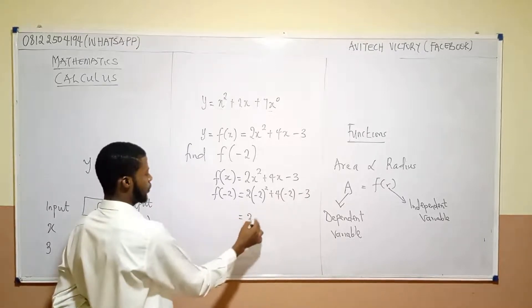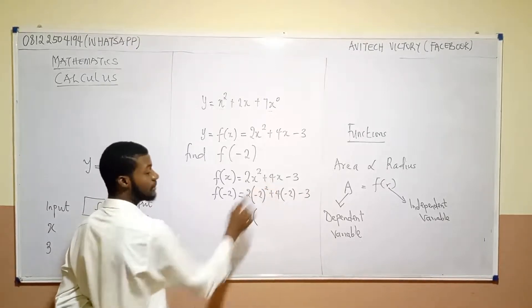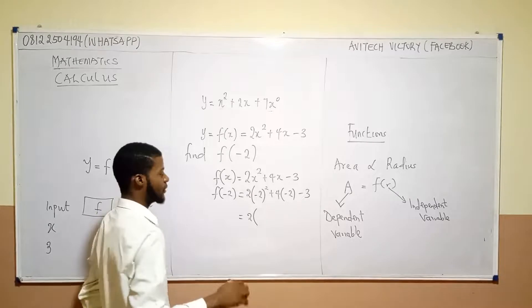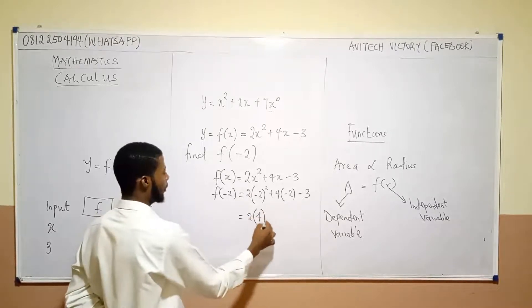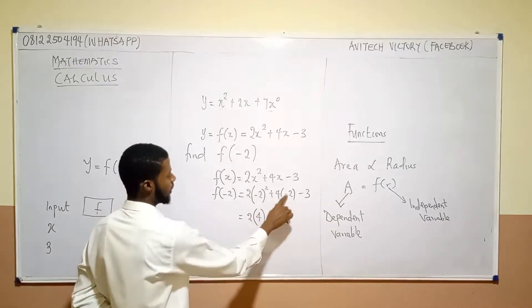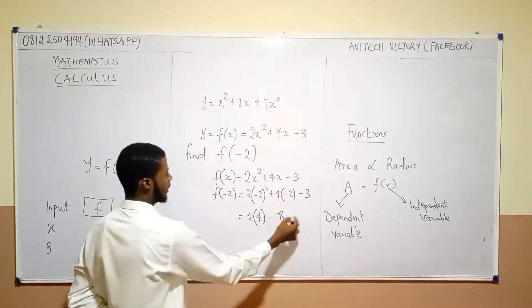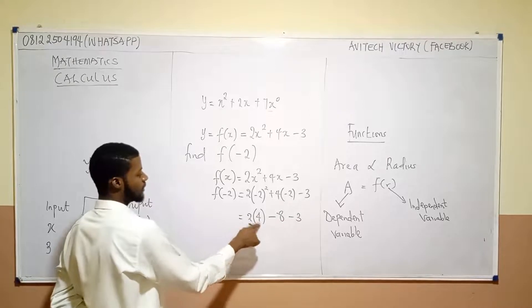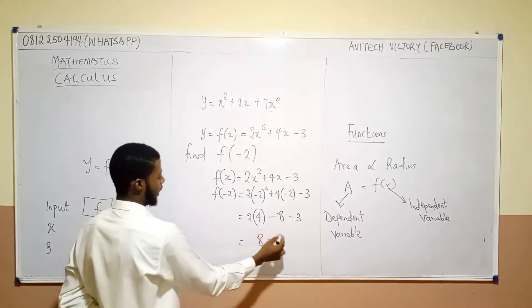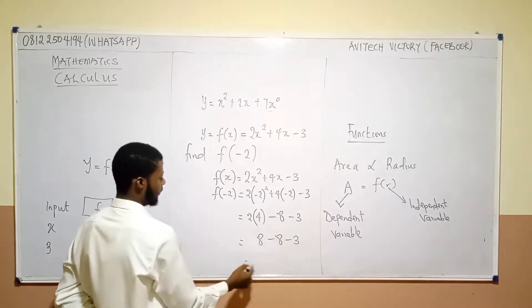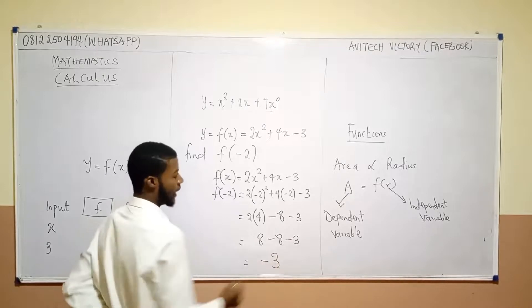Now, this would become 2 bracket minus 2 squared means minus 2 times minus 2. Now, give me plus 4. Then, plus times minus here will give me minus. 4 times 2 will give me 8. Then, minus 3. 2 times 4 is 8. Minus 8 minus 3. Final answer here will give me minus 3.